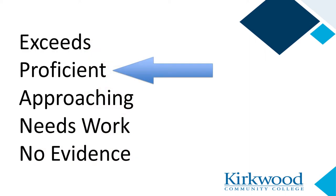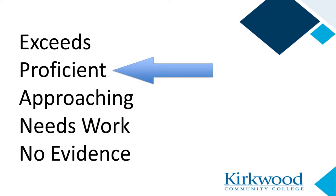If the overall rating is Exceeds or Proficient, you know that you have successfully completed the assessment and demonstrated proficiency. If the rating is Approaching, Needs Work, or No Evidence, then that is your indication that revisions are needed and resubmission is required. Again, all assessments need to be completed at the proficient level in order to complete the training.